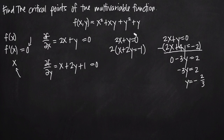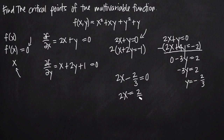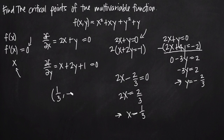Now that we have a value for y, we plug it back into the first equation: 2x plus negative 2 thirds equals 0, so 2x equals 2 thirds. Dividing both sides by 2, we get x equals 1 third. Putting those together as a coordinate pair, we get the critical point of the multivariable function f(x, y) at (1/3, -2/3).